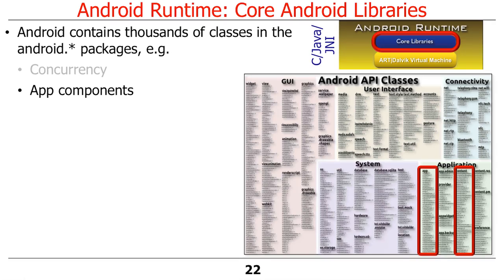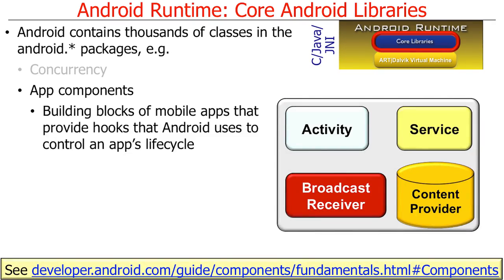There's also a number of various app components defined in several packages within Android — the app package and content package in particular. These app components provide the building blocks for mobile apps and provide hooks that Android uses to control an app's life cycle. These app components include activities, services, broadcast receivers, and content providers. We'll be focusing primarily on services and content providers in this course. The earlier course covered activities and broadcast receivers.